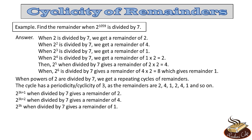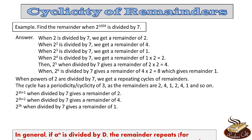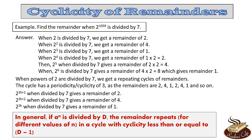This is what the concept of cyclicity is. In general, we can say that if a number a raised to the power n is divided by d, the remainder repeats in a cycle with cyclicity less than or equal to d-1 for different values of n. That is, when successive powers of a number a are divided by d, the remainder repeats in a cycle with cyclicity which is less than or equal to d-1.